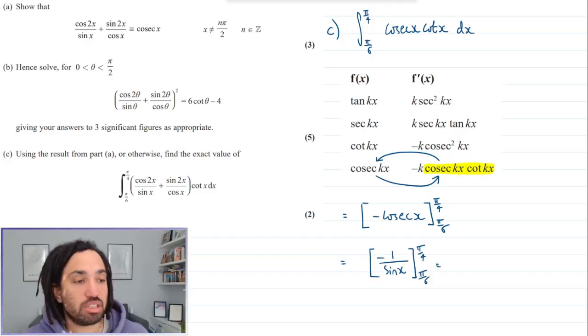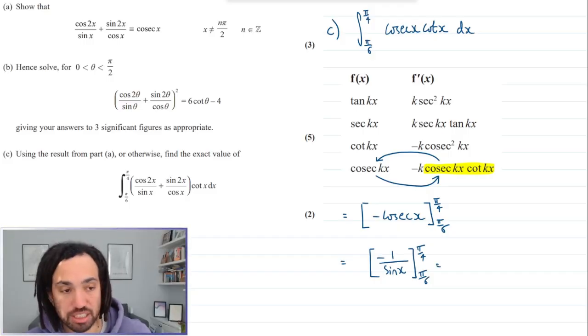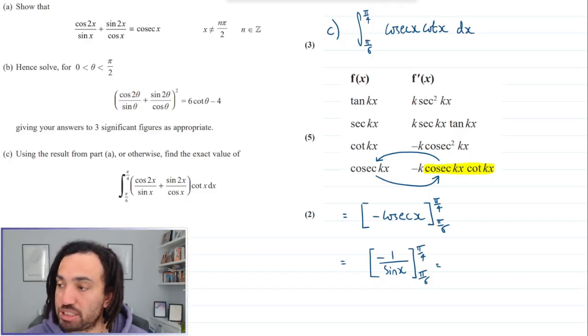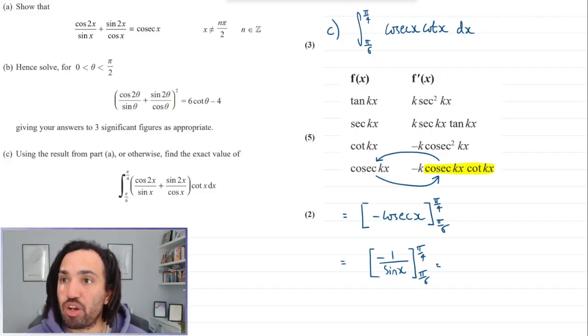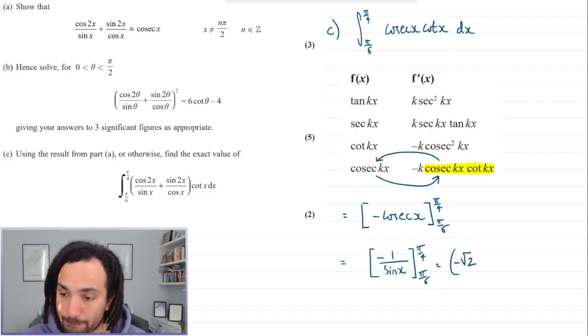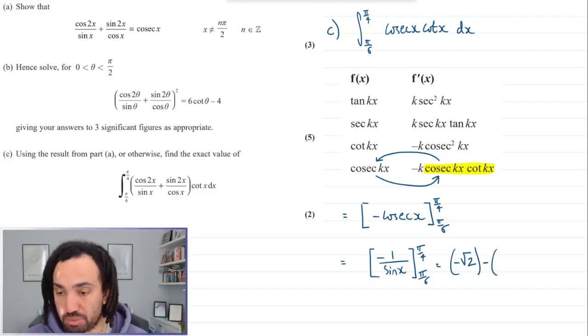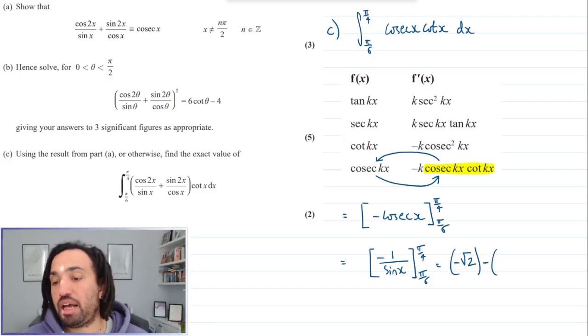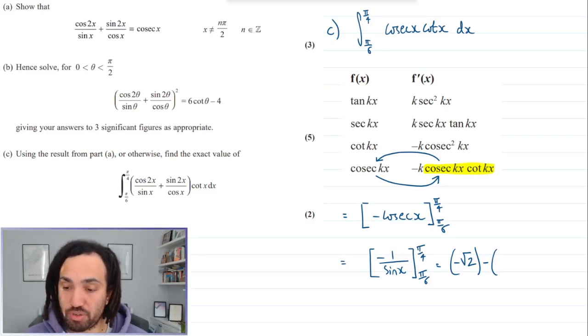When I sub in pi over 4, that's the same as 45 degrees and I get 1 over root 2, so the negative reciprocal of that will be just negative root 2. And then we're taking away because of course we're integrating, we take away the lower bound. When I sub in pi over 6, that is 30, sine of 30 is a half, so the negative reciprocal of that is minus 2.